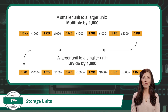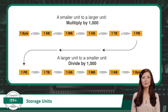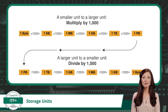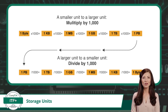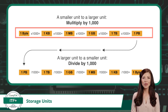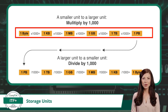At some point you will have to convert between different storage unit sizes. This chart will help visually, but I will also talk you through some key points. First, commit the order of sizes to memory from smallest to largest: byte, kilobyte, megabyte, gigabyte, terabyte, and petabyte.